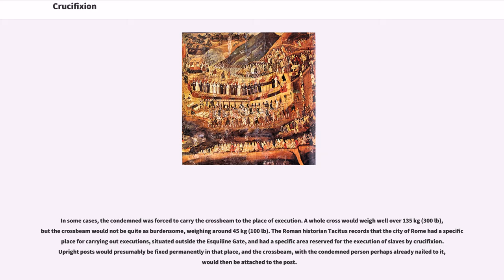In some cases, the condemned was forced to carry the crossbeam to the place of execution. A whole cross would weigh well over 135 kilograms (300 pounds), but the crossbeam would not be quite as burdensome, weighing around 45 kilograms (100 pounds). The Roman historian Tacitus records that Rome had a specific place for executions outside the Esquiline Gate, with an area reserved for the execution of slaves by crucifixion. Upright posts would be fixed permanently there, and the crossbeam, with the condemned perhaps already nailed to it, would then be attached to the post.